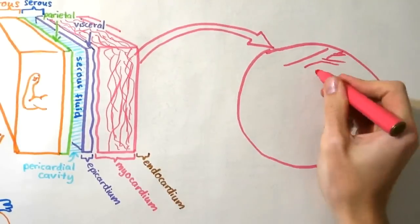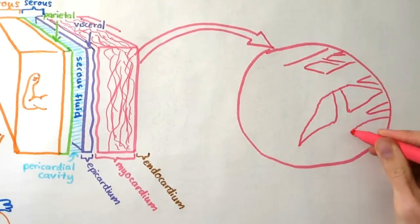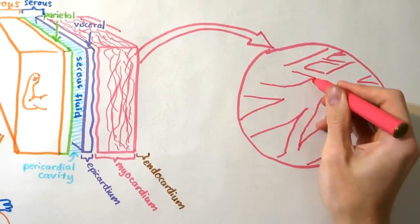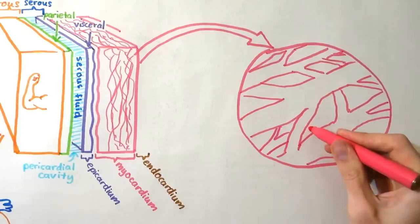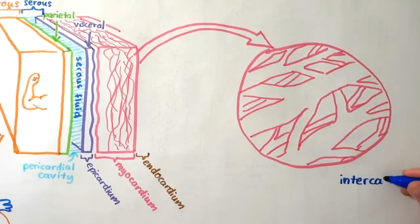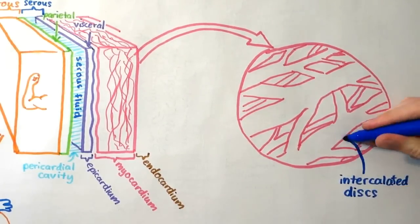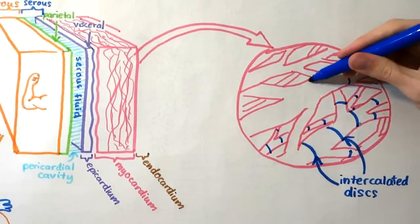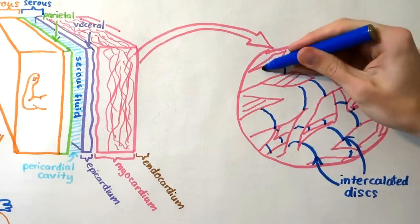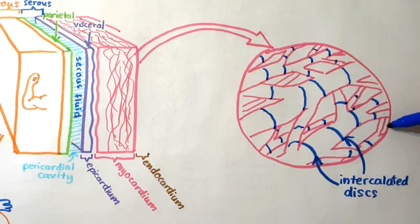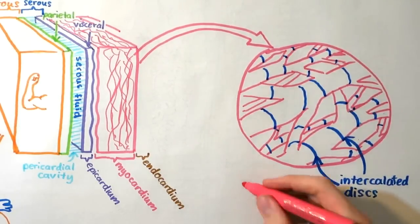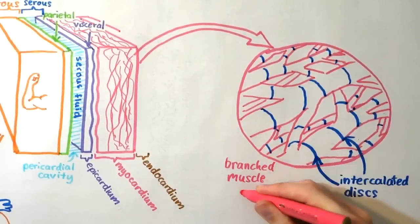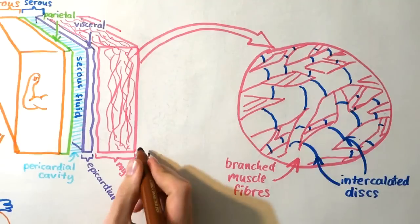The muscle cells in the myocardium are connected to each other by intercalated discs. Intercalated discs strongly adhere muscle cells to one another to keep the muscle together during the strong contraction phase. Intercalated discs also conduct the electrical impulses across the branching muscle fibers to synchronize the contractions.